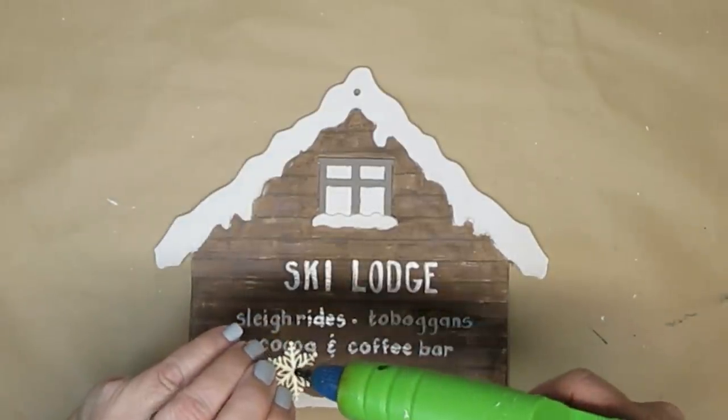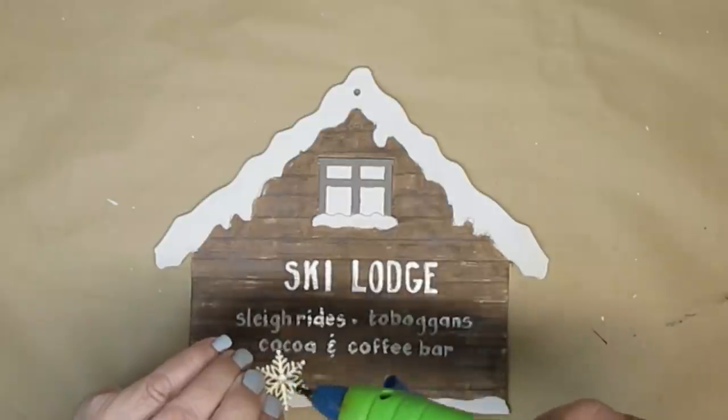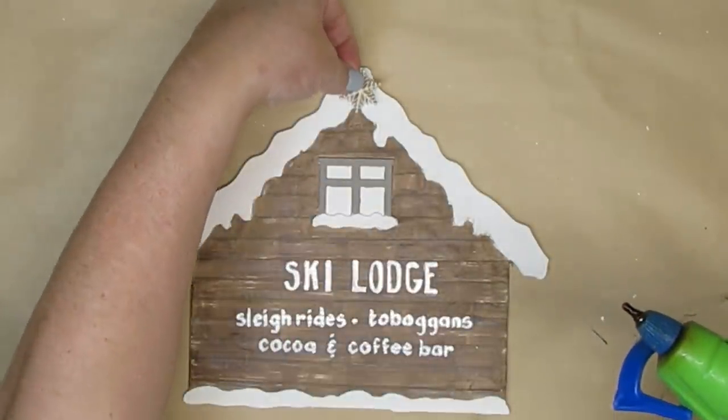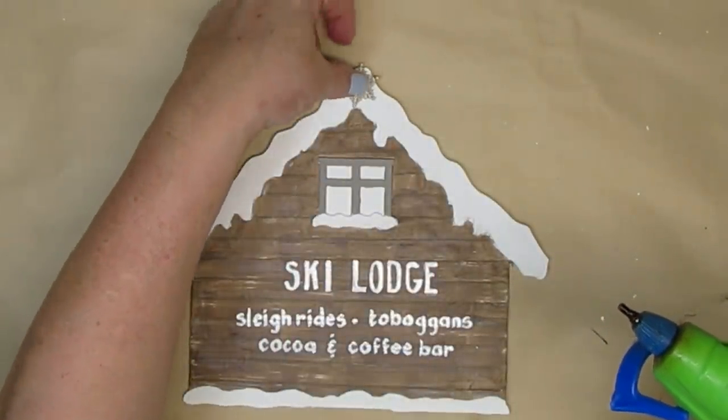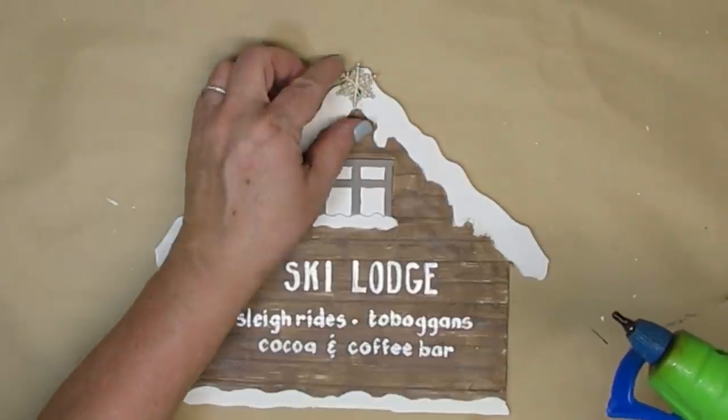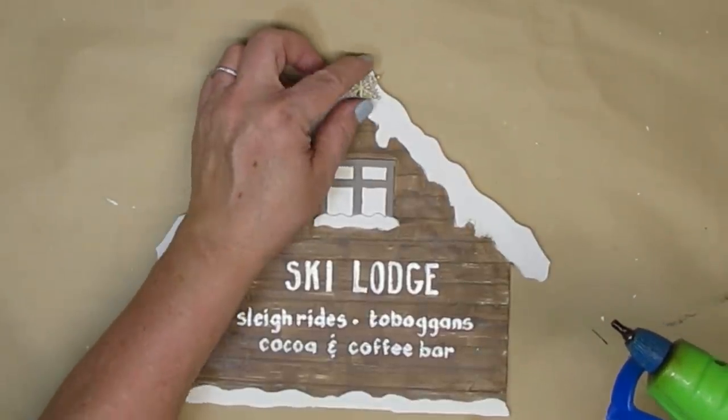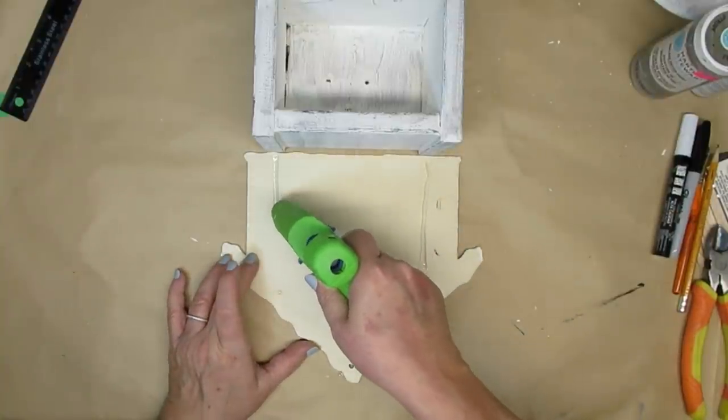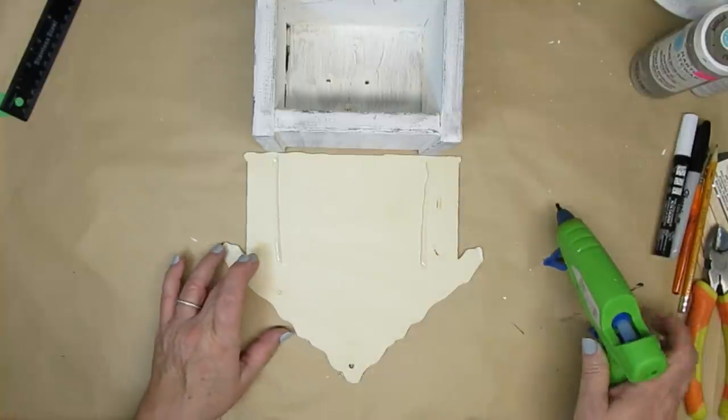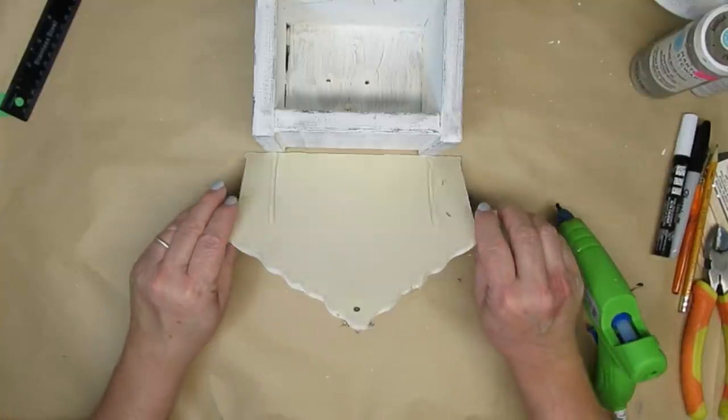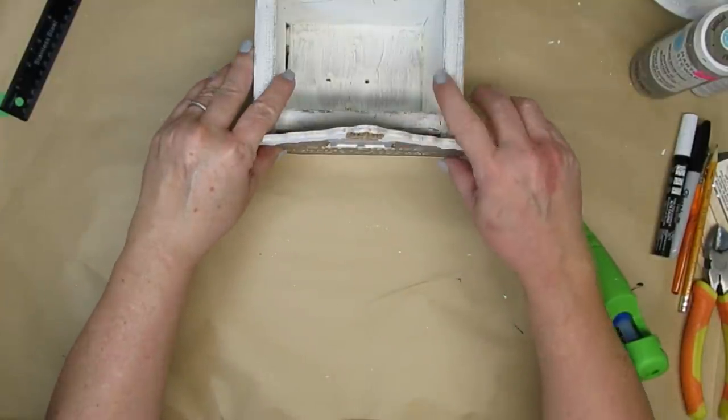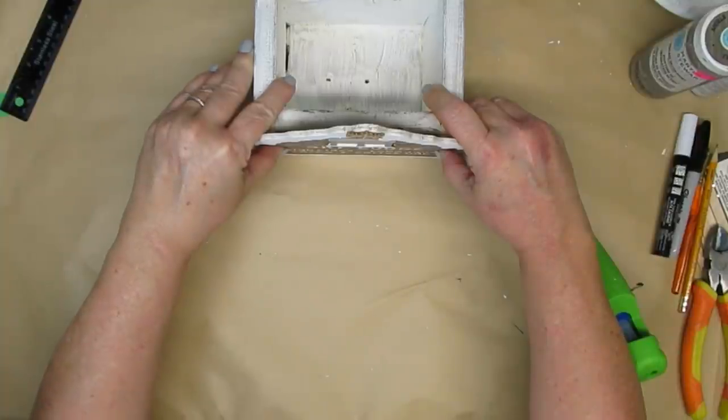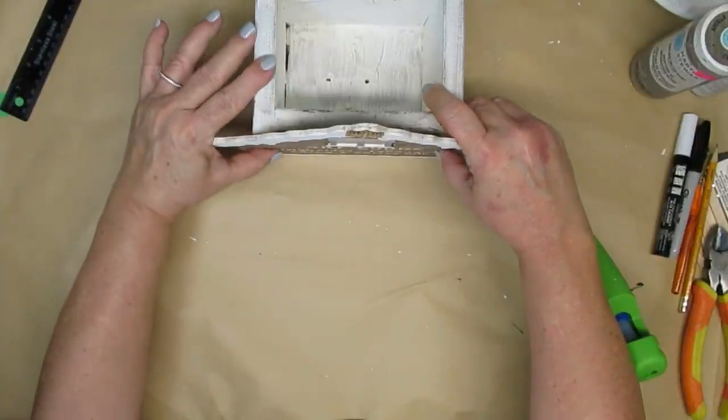To cover up the hole from the hanger, I'm just going to glue on a little wood cutout from the Dollar Tree. It's just a little snowflake and I'm just going to leave it the natural wood color. To finish off this project, I'm going to glue the sign to this wooden box that I had already painted white a while ago. This was just something I found at the thrift store. I'm just going to glue it on and then fill the inside with some winter greens. I think this project turned out really cute.